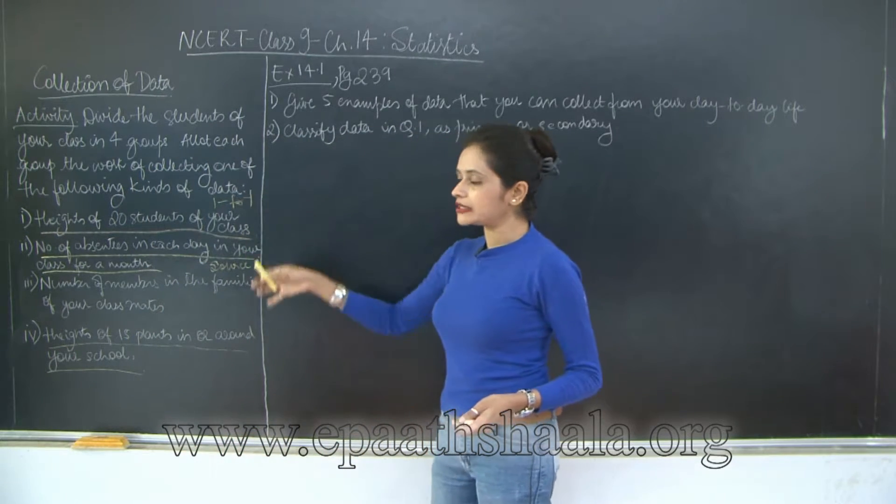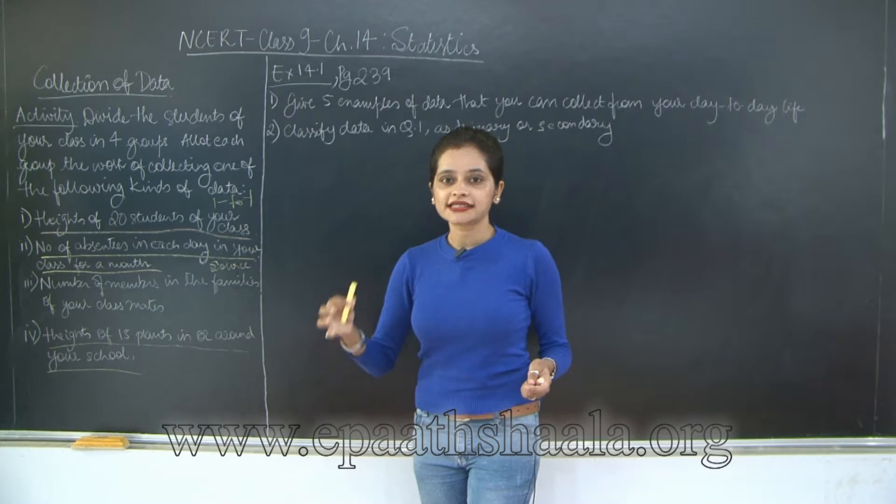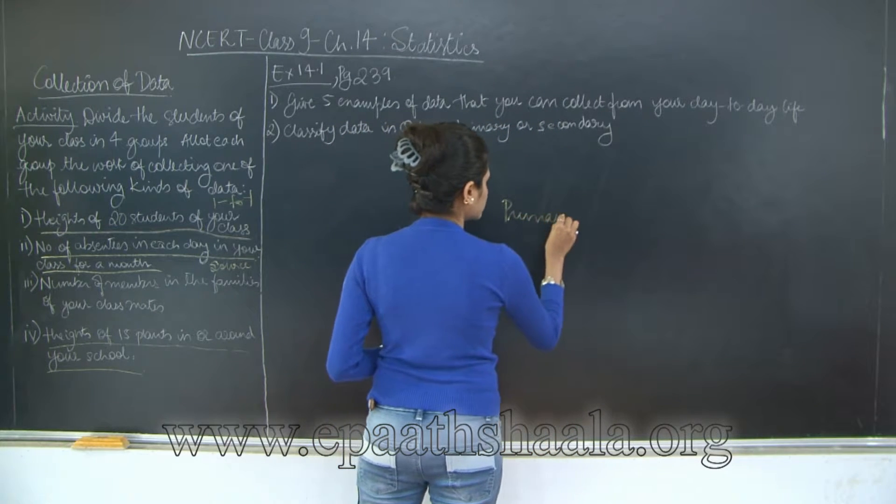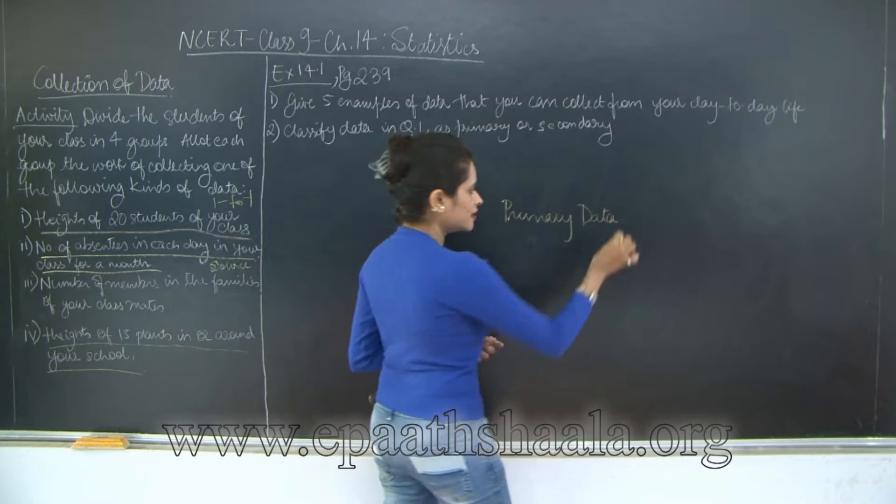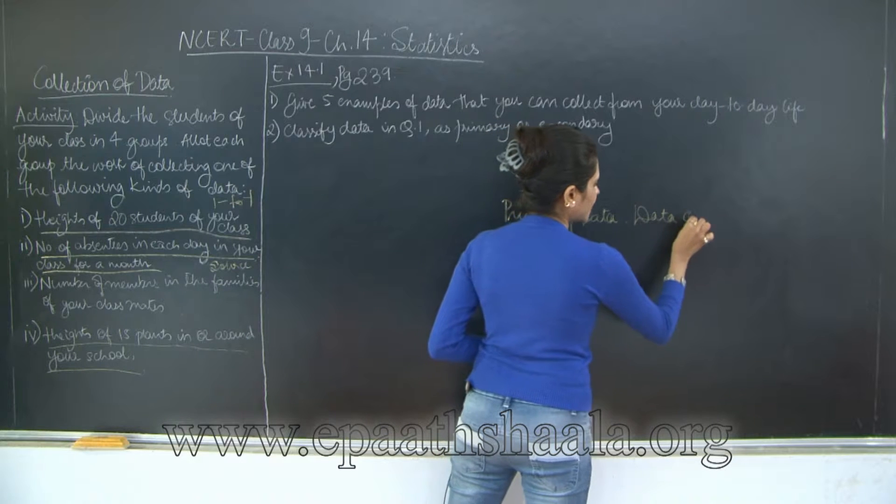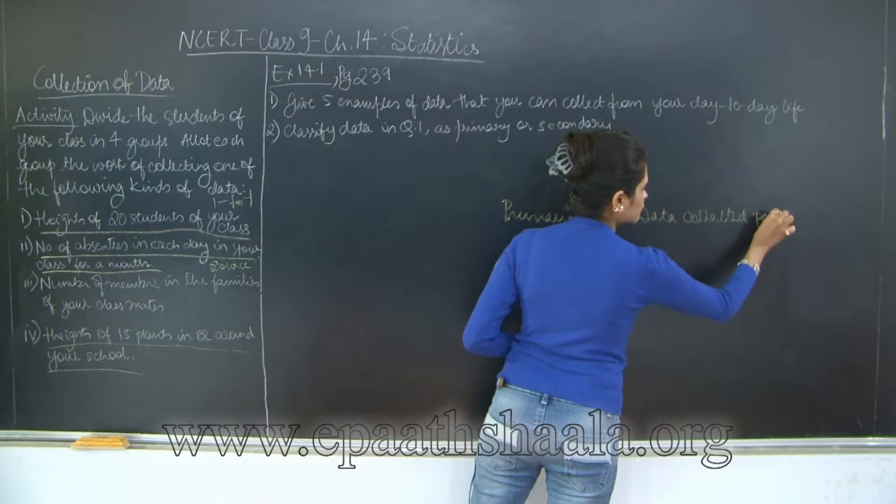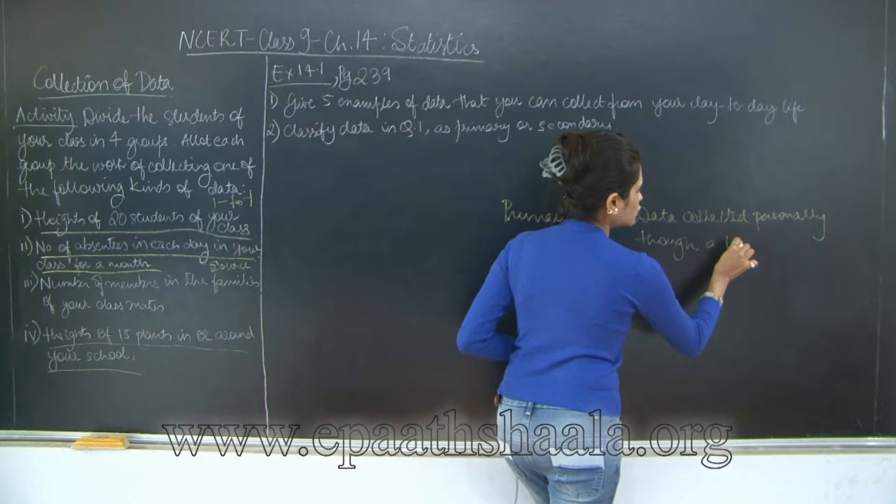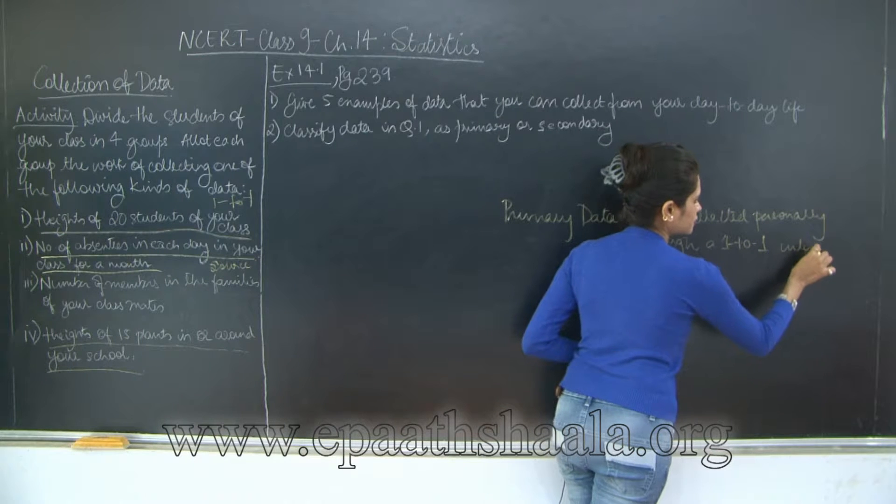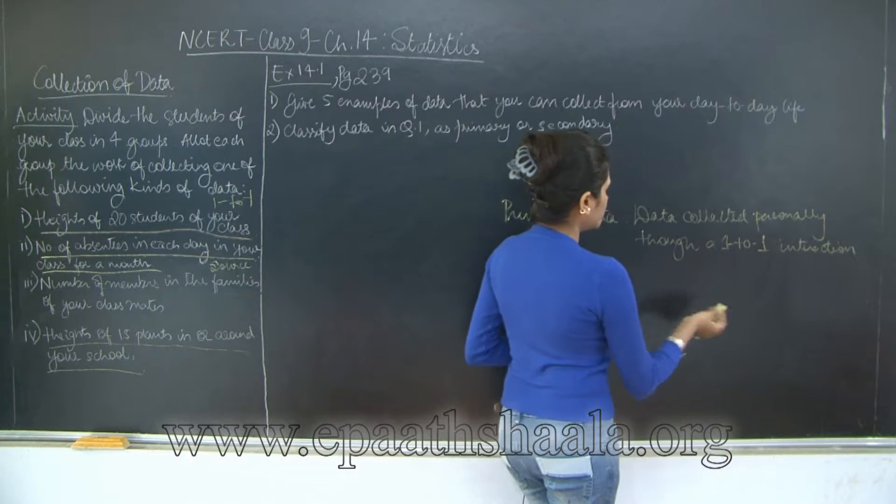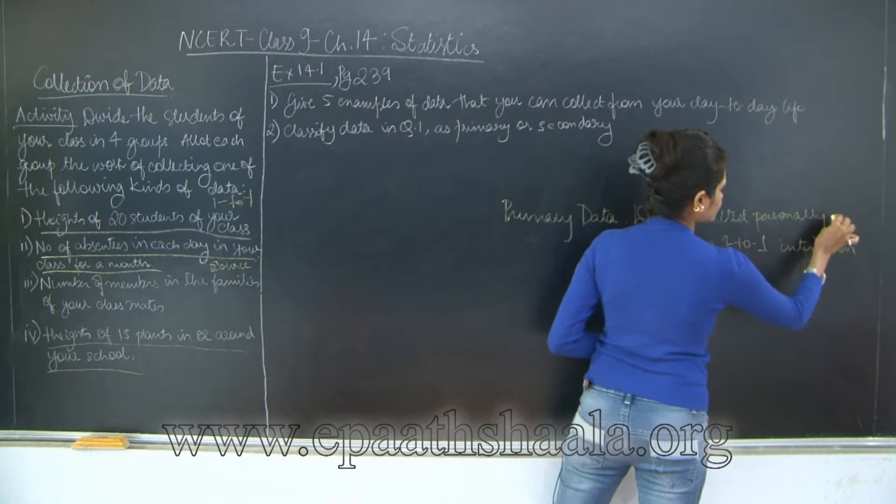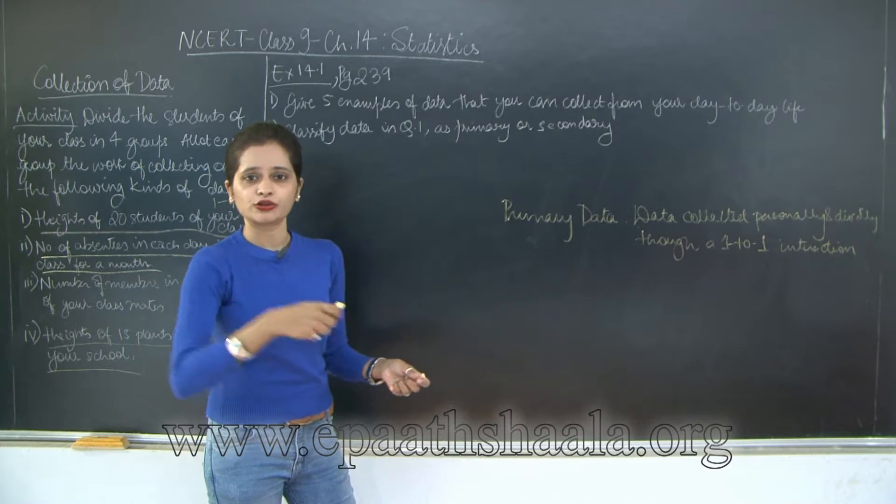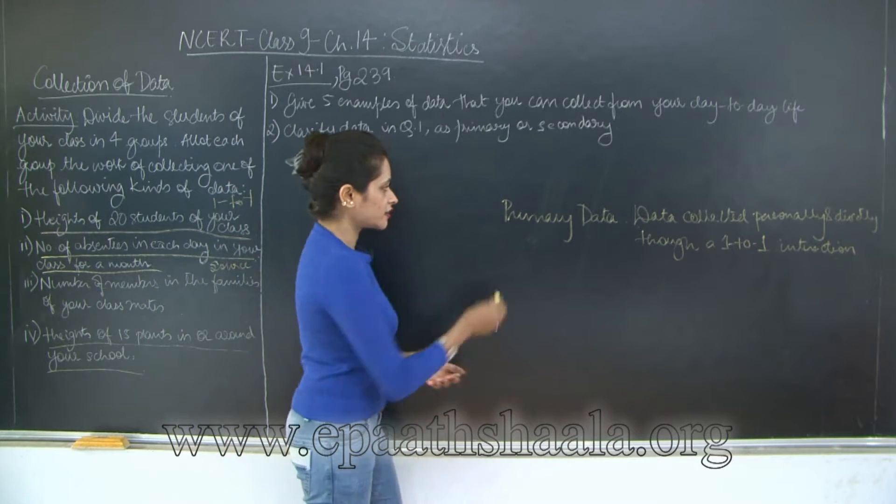So what is the difference between the ones that I have underlined? When I say that some information or data that is gathered personally, that data is known as primary data. Primary data is data collected personally through a one-to-one interaction and also directly, because here no third person is involved. It's just direct - you just approach the person, it's very direct, it's not indirect. So this is primary data.